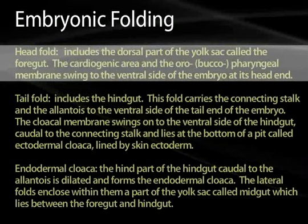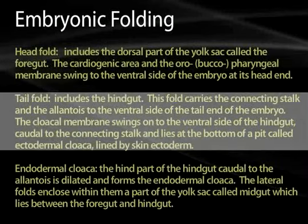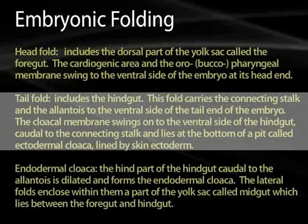It's the tail fold which will invaginate to form the hindgut by pinching off the yolk sac. This fold will carry the connecting stalk and the allantois to the ventral side of the tail of the embryo. The cloacal membrane will swing from the dorsal to the ventral side, and the hindgut will start to be formed at this end.